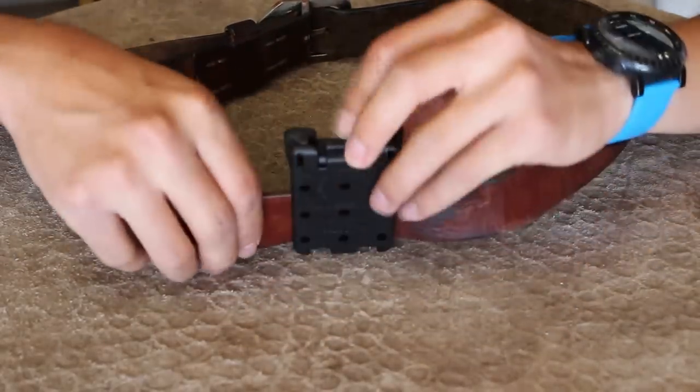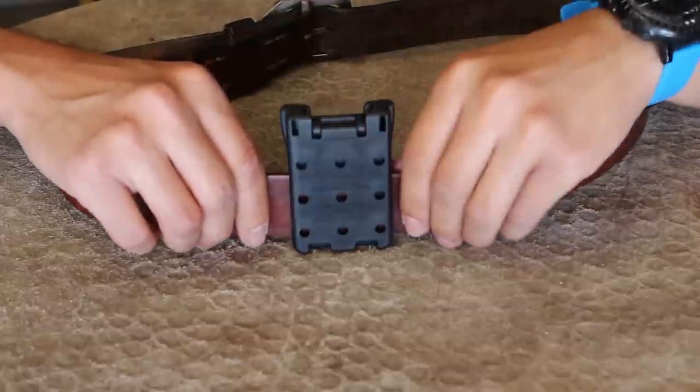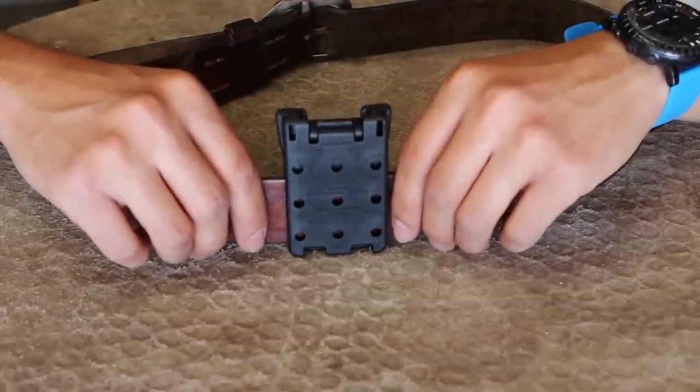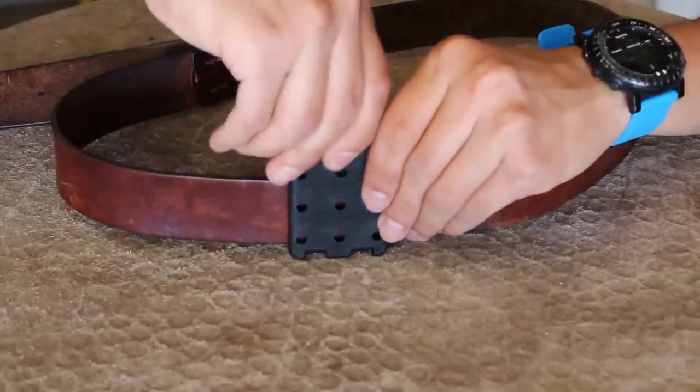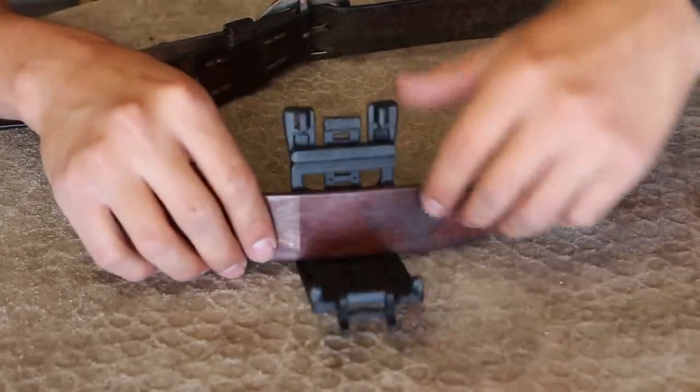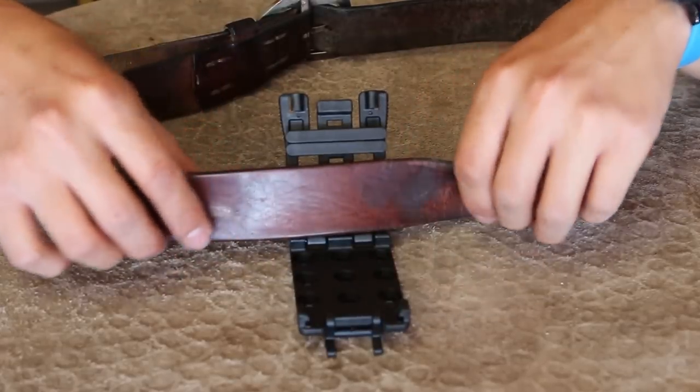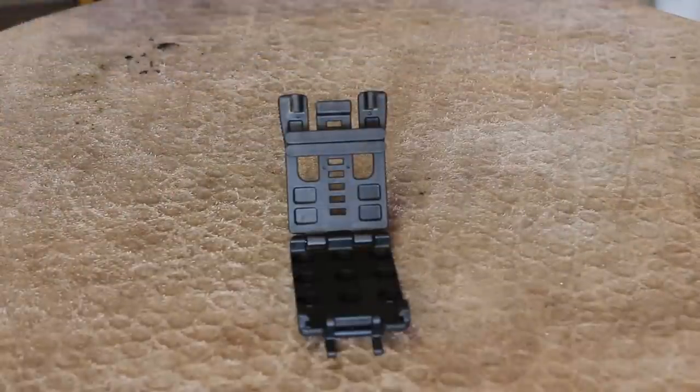So I close it up. A lot less wiggle room. This is going to be the size that I would wear if I was using this on my belt, because if I went down one more it wouldn't work. So now this is sized to my belt, and if I want to change to a different belt I can just resize it and it's really easy. So that's that portion.